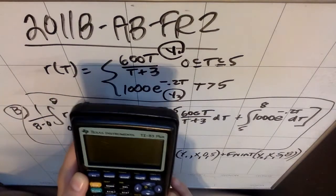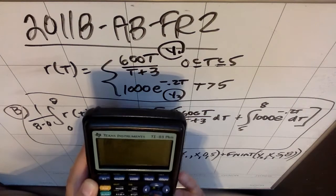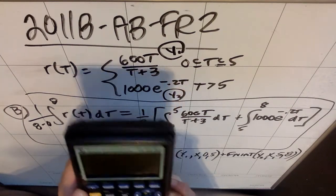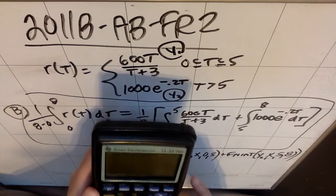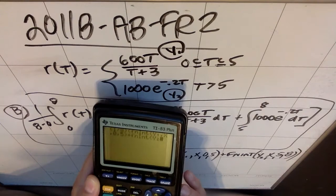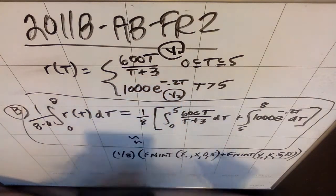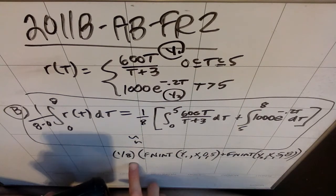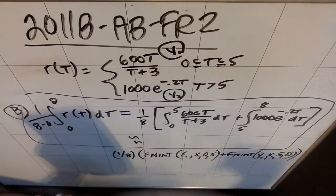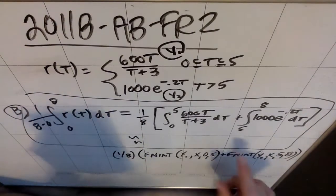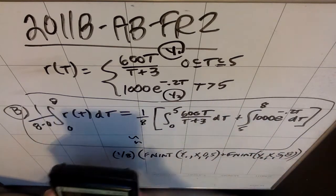So I'm going to type in 1 8th, parentheses, math 9. I'm going to go to vares over to yvares, pick y1, comma, with respect to x from 0 to 5, plus math 9, vares over to yvares, pick function y2, comma, with respect to x from 5 to 8. And because this was a lot, I'm going to double check that I typed it in right. 1 8th, function integrate of the thing I called y1, which I always note on my paper, with respect to x, because x is standing in for t here from 0 to 5, and y2 from 5 to 8, and I hit enter.